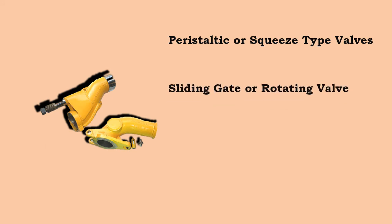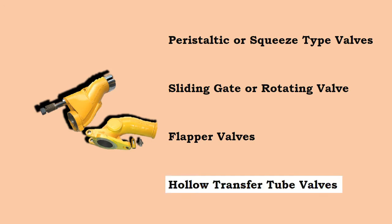The common types of valves used are peristaltic or squeeze type valves, sliding gate or rotating valve, flapper valves, and hollow transfer tube valves. Out of these, hollow transfer tube valves are most commonly used.